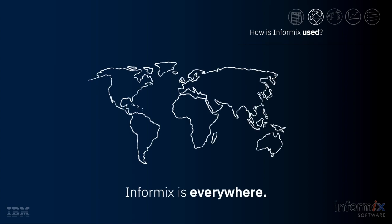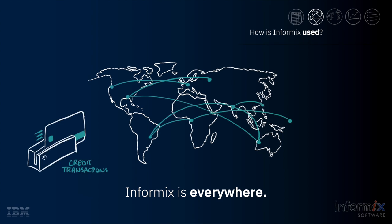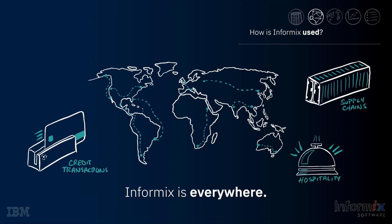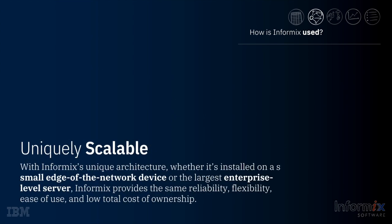When you look at where and how Informix is used today, it is literally everywhere in the world. It is used to validate and route transactions from one of the largest credit card issuers, and to track packages carried by one of the largest shipping companies. It's used to make the total guest experience better at some of the world's largest hotel chains. Informix is a powerful yet invisible part of our daily lives.